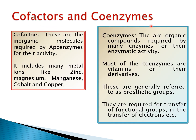Cofactors and coenzymes: Cofactors are inorganic molecules, while coenzymes are organic molecules. Inorganic cofactors are required by the apoenzyme for its activity, and examples include magnesium ions, zinc ions, manganese, cobalt, and copper. Coenzymes are covalently bound organic molecules — examples include vitamins and their derivatives — and they are required for the transfer of functional groups and electrons.